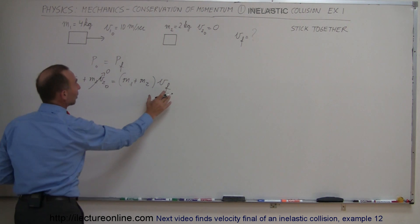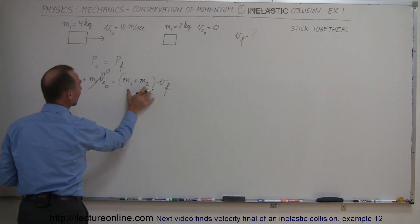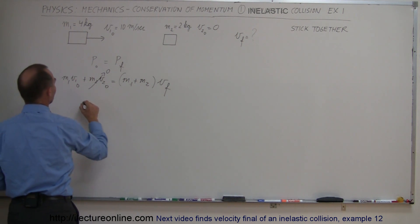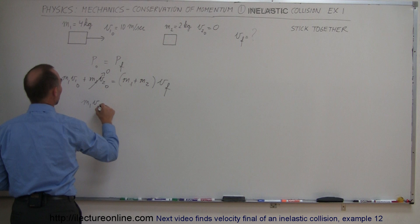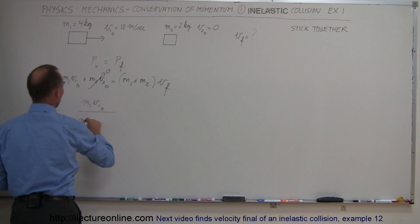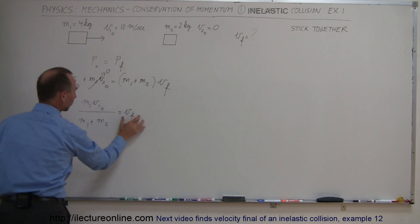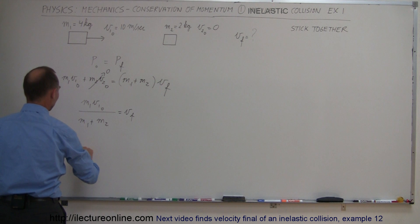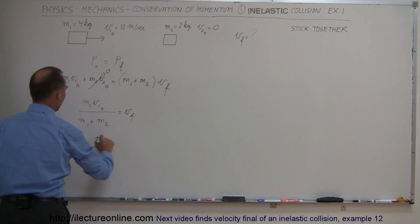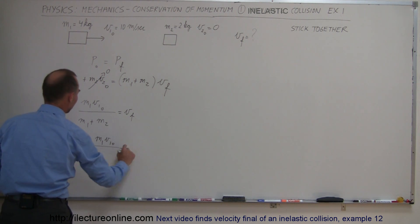So now we can see that we can solve for v final by taking this and dividing that underneath the left side. So we have m1 v1 initial divided by m1 plus m2 equals v final. I always like to turn the equation around so the variable I'm looking for is on the left side of the equation. So v final equals m1 v1 initial divided by m1 plus m2.